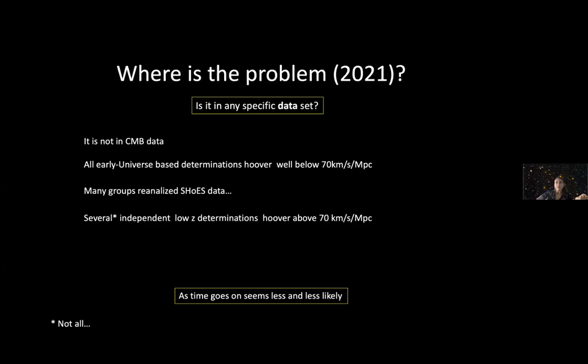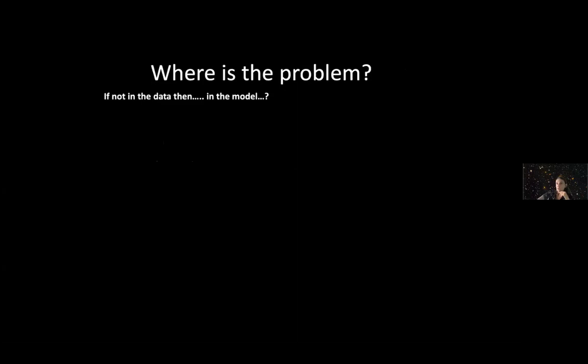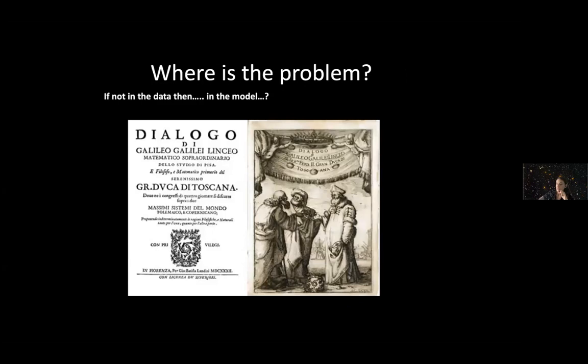Is it in any specific data set? It's not in the CMB data. All early universe-based determinations hover well below 70 km per second per megaparsec. Many groups reanalyzed SH0ES data. Several independent low-redshift determinations hover above 70, but not all. The tip of the red giant branch does not. It turns out if it's not in the data, we may ask whether the problem can be in the model. But this is a big deal.